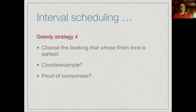Here is a fourth strategy: instead of choosing the booking whose start time is earliest, let's choose the one whose finish time is earliest. Can we find a counter-example, or should we try to prove it correct? In fact, this strategy does work — let's see how we can prove it.